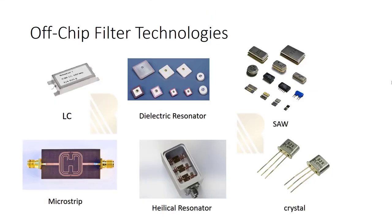Let's talk about different kinds of filters. First, we have to divide filters into two groups: off-chip and on-chip filters. Off-chip filters are not integrated in the same IC as, for example, a receiver or transmitter — they have their own separate block. We have to connect them to our receiver, transmitter, or transceiver, which is why we call them off-chip.